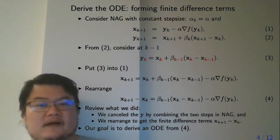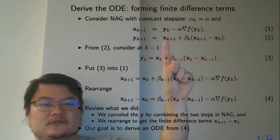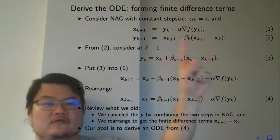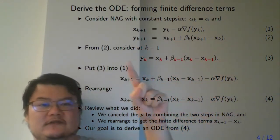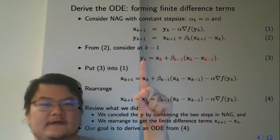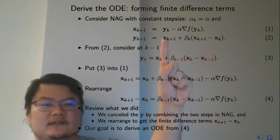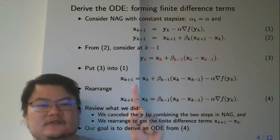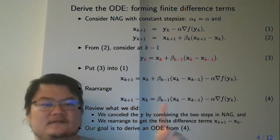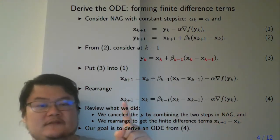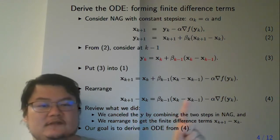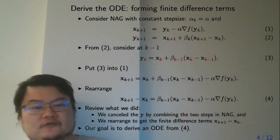You want to plug this equation into the other. One equation is at k and another is at k plus 1, so you replace all the k with k minus 1. This equation becomes the shifted version. Now you have yk on both sides, so you can substitute. You move one term to the other side so it becomes subtraction — this is equation 4. For equation 4, what you have are finite difference terms. This is the starting point to form an ODE.